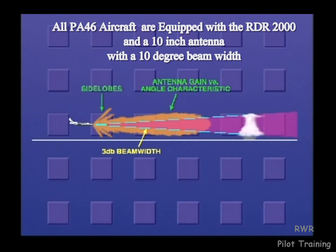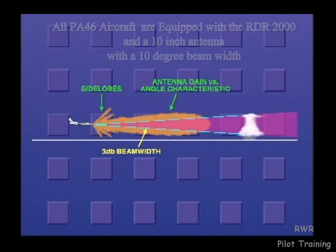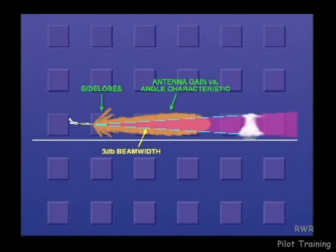Also note that there are small lobes of the gain characteristics at fairly large angles. These are called side lobes. Generally, these are not important since the gain value of these lobes is down 25 or more dB from the peak. However, a bad radome can increase these side lobes to a point that they can cause a constant radar reflection from the ground. This is commonly referred to as an altitude ring because the display will show a concentric ring at a distance equal to the slant range of the side lobe to the ground.